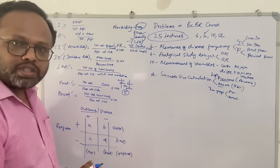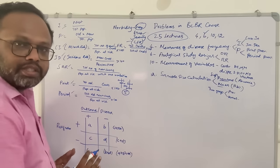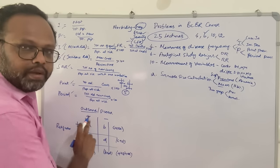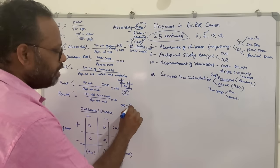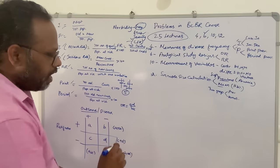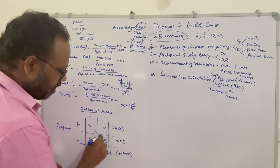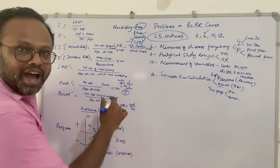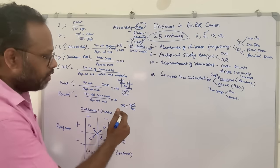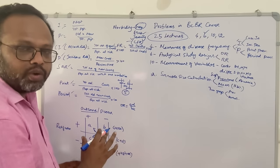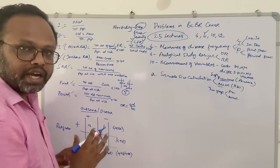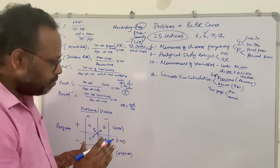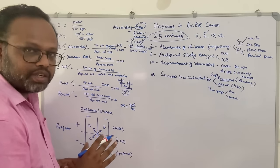Odds ratio is given by the formula A×D divided by B×C — this is the cross product ratio. You can remember B×C by the mnemonic 'after death divided by before Christ.' Interpretation: odds ratio equal to 1 means no relationship; less than 1 means negative or protective relationship; more than 1 means positive relationship. Odds ratio is used in case-control study.